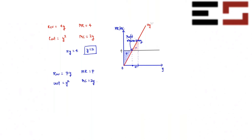As long as p is positive, you will always find an intersection at a positive level of output. If p is smaller, the MR curve shifts down and the optimal output is lower; if p is larger, the optimal output is higher. You always equate price with marginal cost to get the optimal supply.